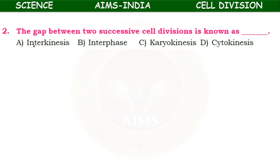Next question: the gap between two successive cell divisions — interkinesis, interphase, karyokinesis, or cytokinesis? Karyokinesis means division of the nucleus. The answer is interphase — interphase is the gap between two successive cell divisions.